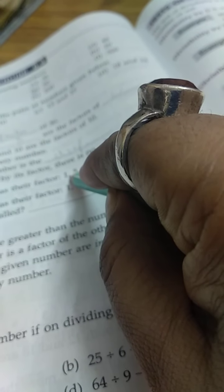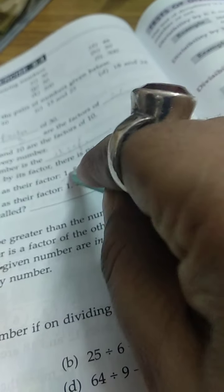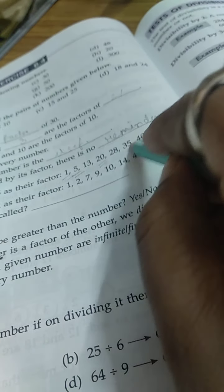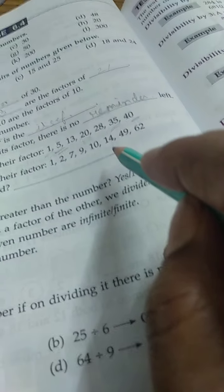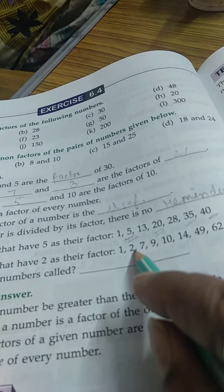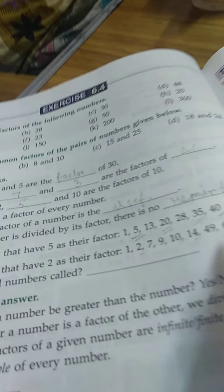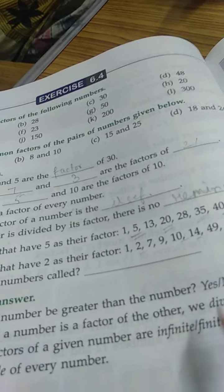Here we have to find which numbers have 5 as a factor: 5, 20, 35, 40. Next, which have 2 as a factor: 2, 10, 14, 62.